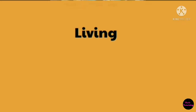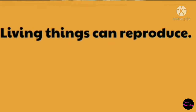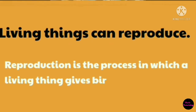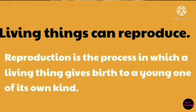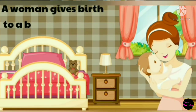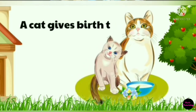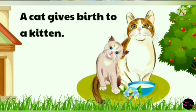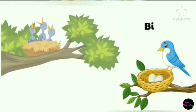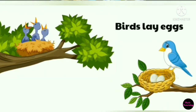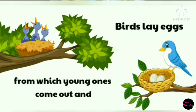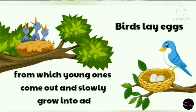Living things can reproduce. Reproduction is the process in which a living thing gives birth to a young one of its own kind. A woman gives birth to a baby. A cat gives birth to a kitten. Birds lay eggs from which young ones come out and slowly grow into adults.